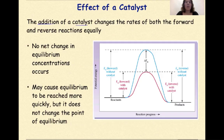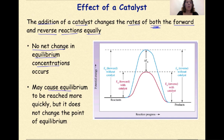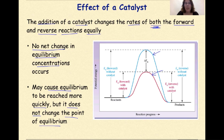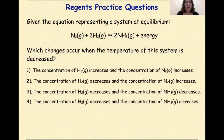Effect of a catalyst. The addition of a catalyst changes the rates of both the forward and reverse reactions equally. There is no net change in equilibrium concentrations. It may cause the equilibrium to be reached more quickly, but it does not change the point of equilibrium. With the addition of a catalyst, we might see the term alternative pathway being used. An alternative pathway means it's different from the original pathway of the energy equation as the result of a catalyst being added and the activation energy being lowered.